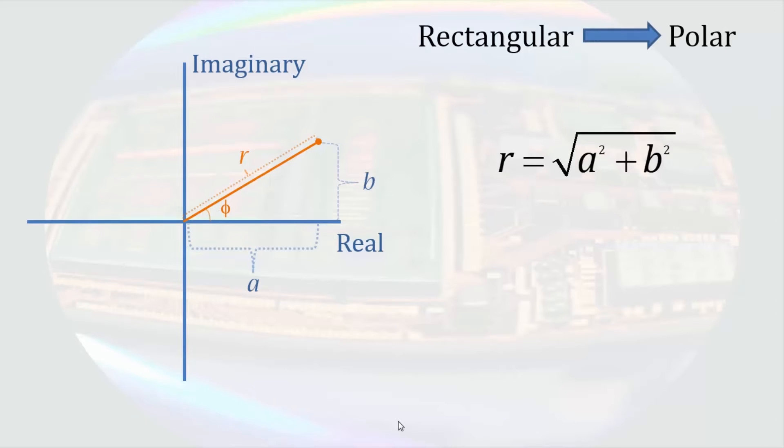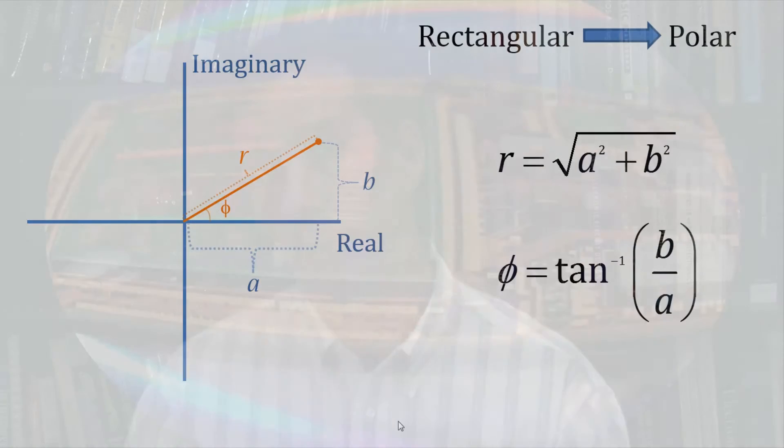We can see the length r is simply the hypotenuse of a triangle with sides a and b. So r will be equal to the square root of a squared plus b squared. The angle phi will be the tangent inverse of the opposite side over the adjacent side or b over a.